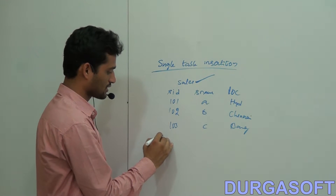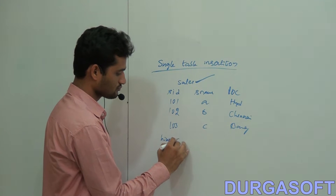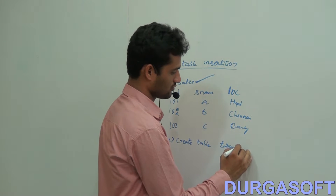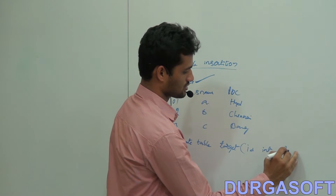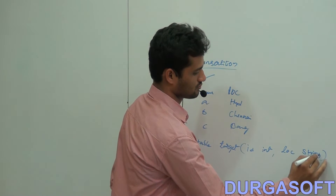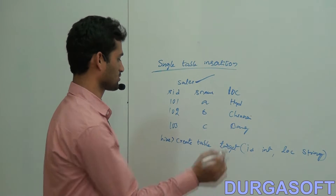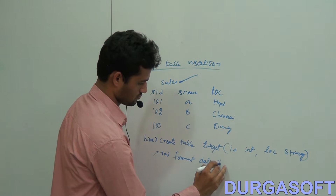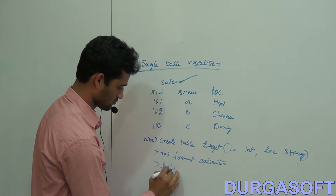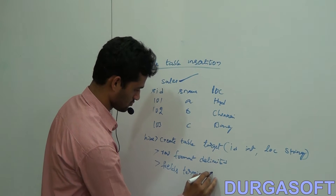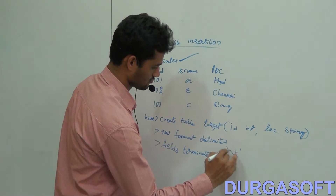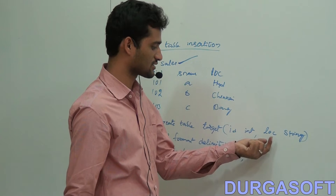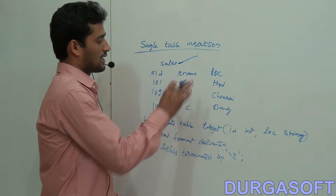I'm creating another table called target. I'm creating it with columns: ID int, and location string. The row format is delimited, fields terminated by backslash t. So this target table has two columns — ID of int type and location of string type.